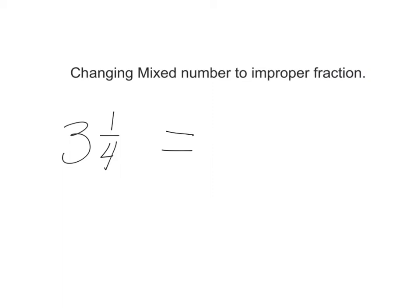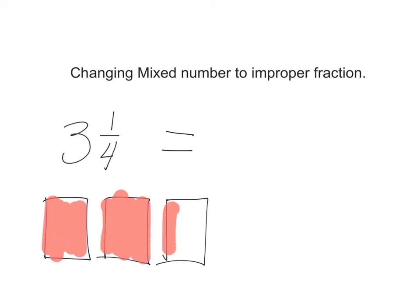So the best way to start is to draw a picture. I'm going to draw a picture to represent 3 and 1 fourth. So I know that I have 3 whole sections. Using boxes is usually the easiest way to split up fractions. Circles can sometimes get tricky, depending on the fraction.